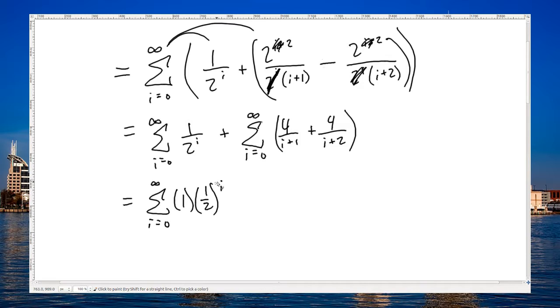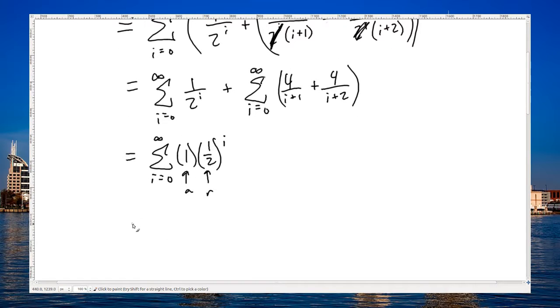a, r to the, instead of n, we have i's, but that's fine. And that's going to get us a over 1 minus r, which is 1 minus 1 half, 1 divided by 1 half is 2.